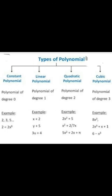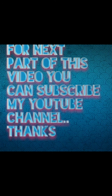Summary of polynomial types: a constant polynomial has degree 0; a linear polynomial has degree 1; a quadratic polynomial has degree 2; and a cubic polynomial has degree 3. Degree means the highest power of the variable. For the next part of this video, please subscribe to my YouTube channel. Thanks.